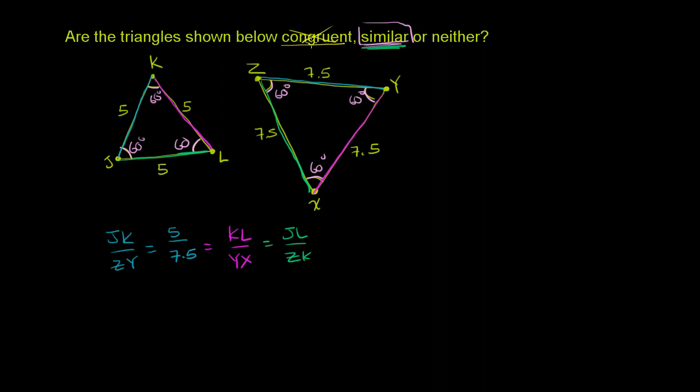Now one thing I want you to realize, a congruent triangle is a little bit more strict. It's kind of a similar triangle where all of the sides are also the same length. Really all of the corresponding features are the same size. So all congruent triangles, if two triangles are congruent, they are definitely going to be similar.